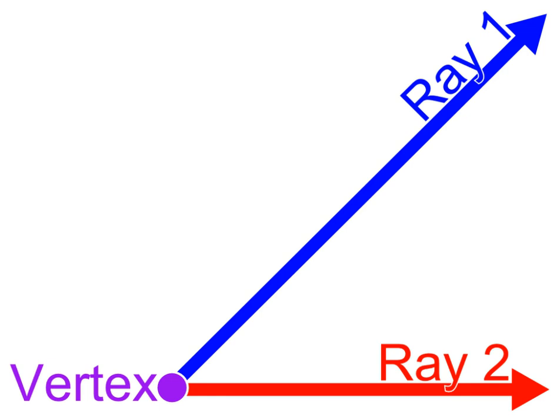There are three special angle pairs which involve the summation of angles. Complementary angles are angle pairs whose measures sum to one right angle (90 degrees). If the two complementary angles are adjacent, their non-shared sides form a right angle. In Euclidean geometry, the two acute angles in a right triangle are complementary, because the sum of internal angles of a triangle is 180 degrees and the right angle itself accounts for 90 degrees. The adjective complementary is from Latin complementum, associated with the verb complere, meaning to fill up. An acute angle is filled up by its complement to form a right angle. The difference between an angle and a right angle is termed the complement of the angle.